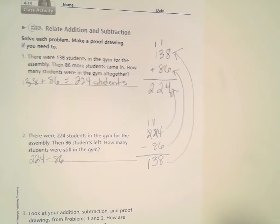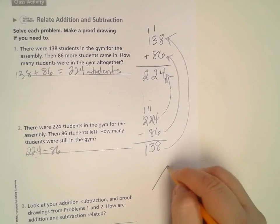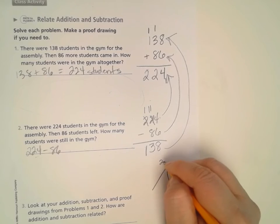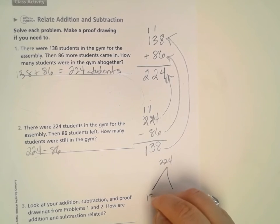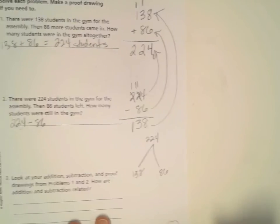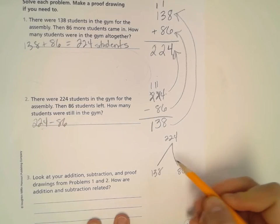Hey, this is its own math mountain. Let's draw it right here. So the total was 224. We had 138, and then there's that 86 that came in and that left. So here's our math mountain.